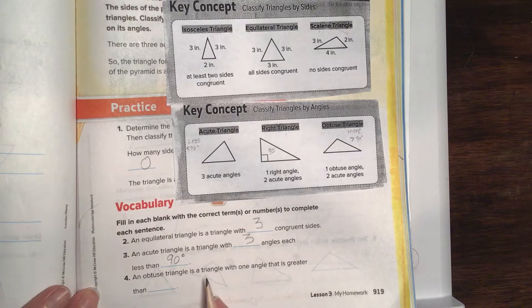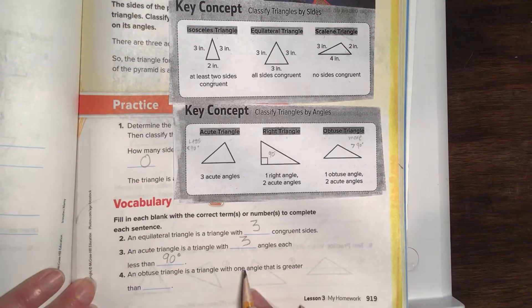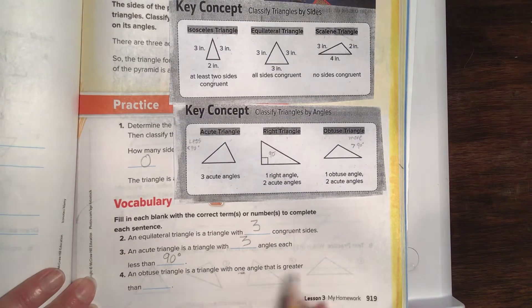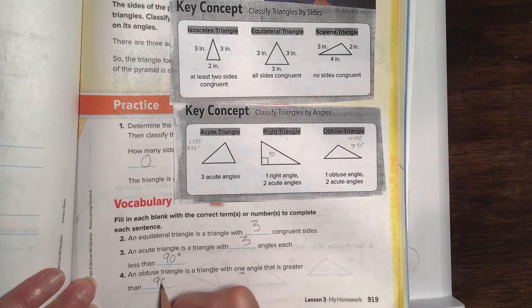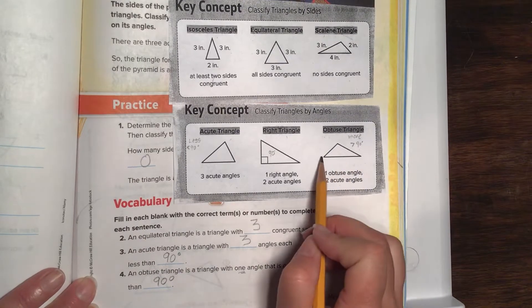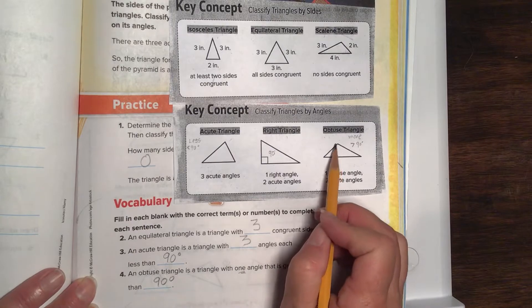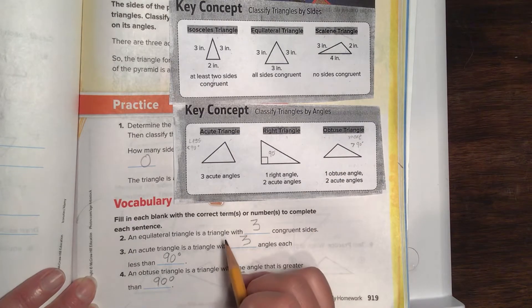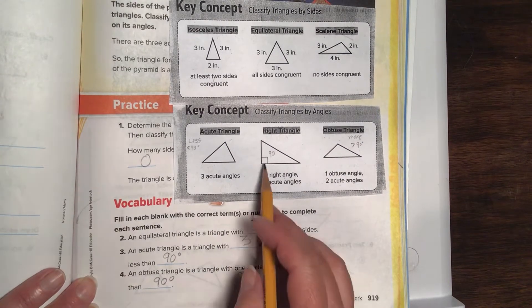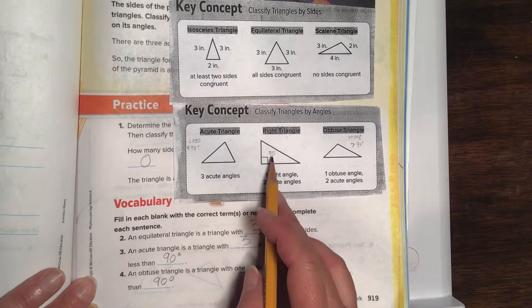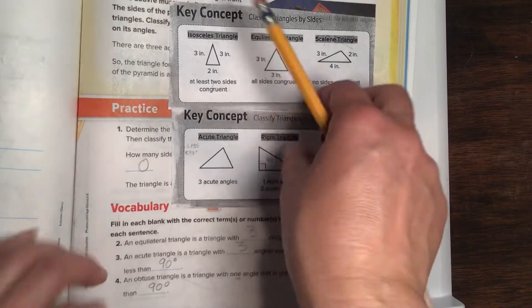An obtuse triangle is a triangle with one angle that is greater than, yep, obtuse. That great big angle. That angle right there is greater than 90 degrees. And remember, 90 degrees is if you can draw an L and then do a perfect little box in it. Okay, let's move on, shall we?